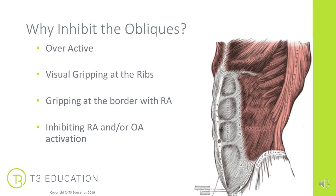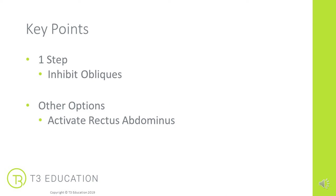This gripping effect or over-dominance can sometimes play a role where we're getting an inhibition or lack of activation of some of the other abdominals, like the rectus abdominis. So we're going to look at a very simple taping here to inhibit the obliques.